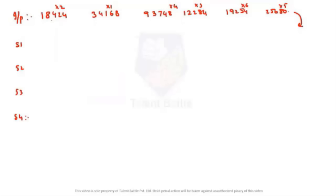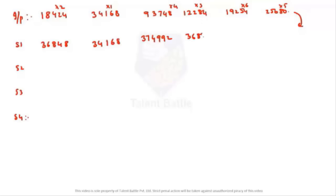1,84,24 into 2 gives 36,848. Into 1 gives 34,968. Into 4 is a bit difficult, but the answer is 3,74,990. Into 3 gives 36,852. Into 6 gives 1,15,524. Into 5 gives 1,28,400. So from input to step one, that is the multiplication of numbers.